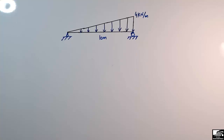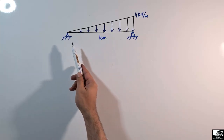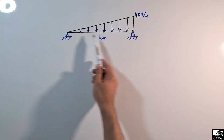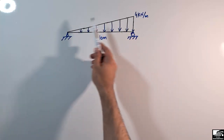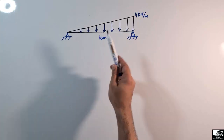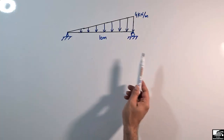Hello guys, welcome back to EC1 Engineering YouTube channel. Please subscribe to our channel for daily engineering videos. In today's lecture, we are going to convert the uniformly varying load, or triangular load, on a beam to a pointed or concentrated load.